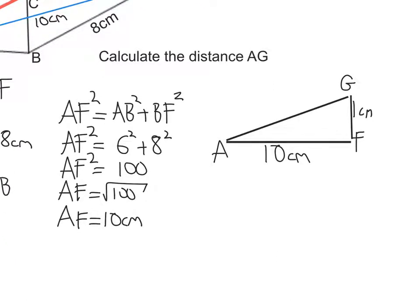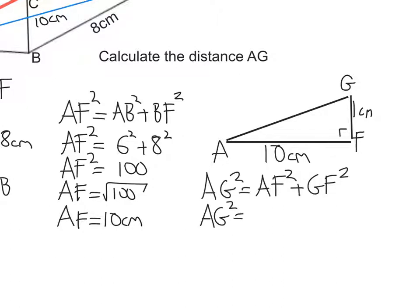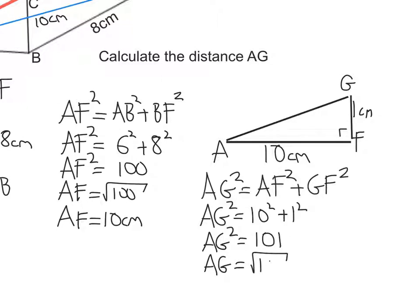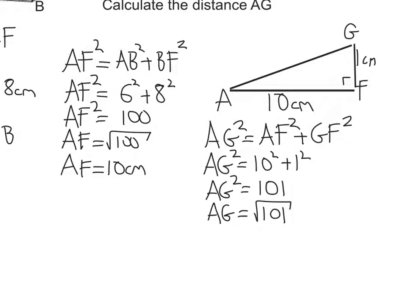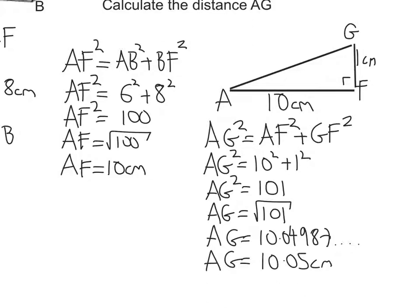Now we can work out AG because we have a right angle here. AG squared is equal to AF squared plus GF squared. Substituting in our values: AG squared is equal to 10 squared plus 1 squared. 10 squared is 100, 1 squared is 1, so 100 plus 1 is 101. We're looking for the square root of 101. Putting that into our calculator, AG is equal to 10.04987... And to two decimal places, we get 10.05 centimetres.